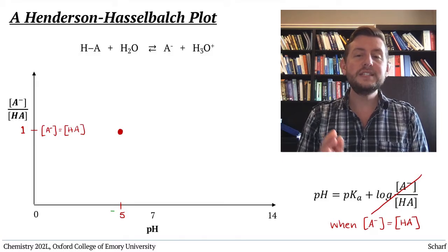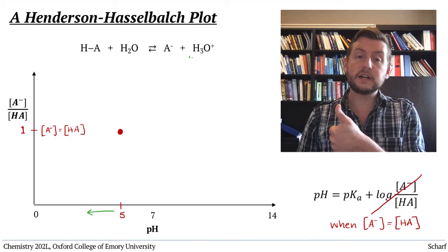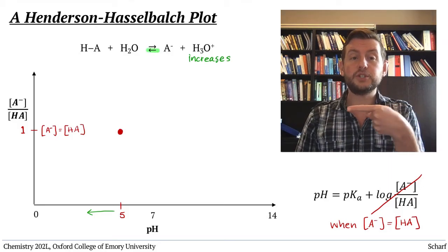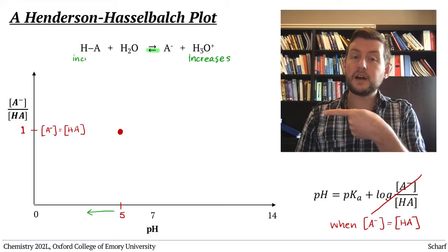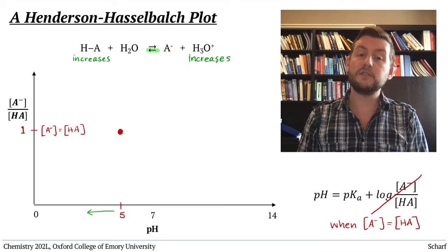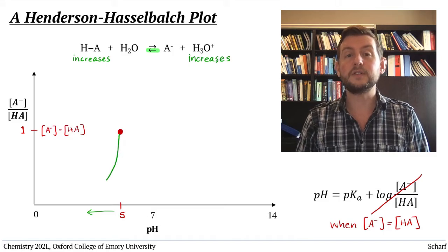As you decrease the pH, you're increasing the concentration of H3O plus in the solution, and by Le Chatelier's principle, the equilibrium shifts left. The concentration of HA increases, and the concentration of A- decreases, and the curve looks like this.